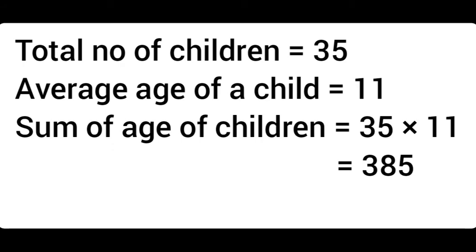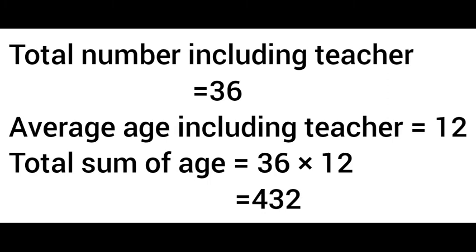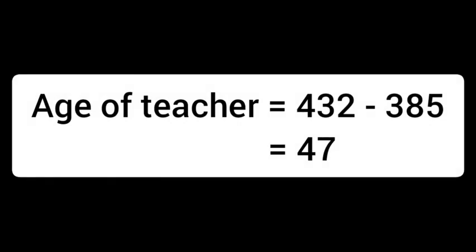Now, including the teacher, the total number becomes 36, and the average age is 12. So the total sum of ages of all 36 is 36 into 12, which equals 432. The teacher's age is total sum minus children's sum: 432 minus 385, and we get 47.